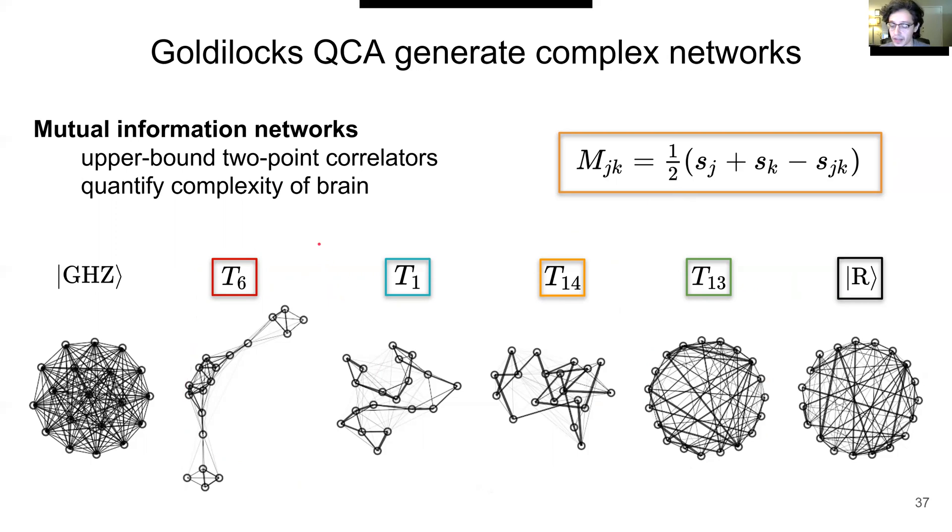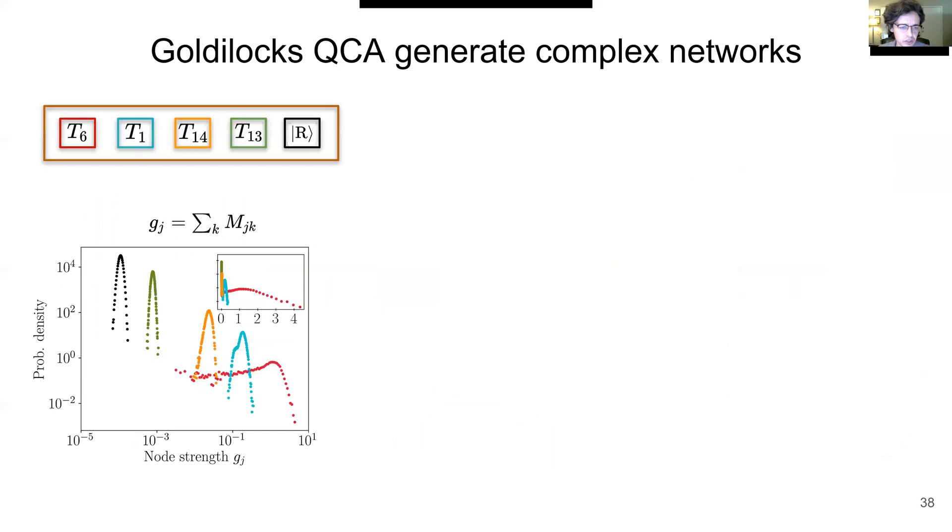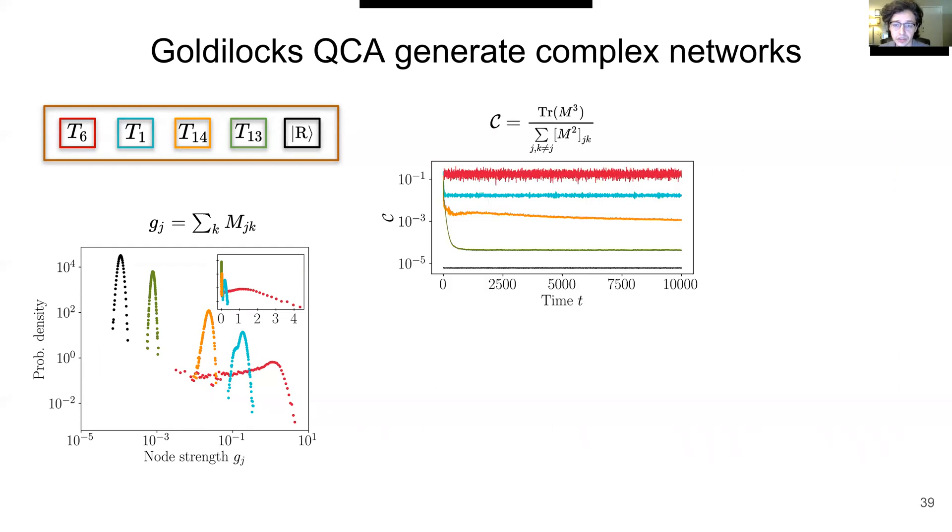Let's quantify the structure of these networks using network measures. First, we show the node strength probability distribution. Rule T6 has a broad distribution signaling the presence of hubs in the network. For clustering as a function of time, we see that the Goldilocks rule has a high value for all times. The far-from-Goldilocks rule is the most like a random network, shown in the black line.